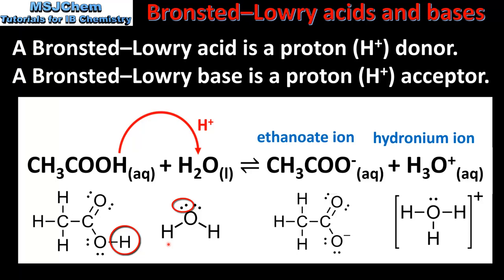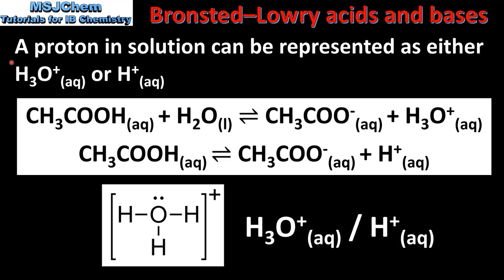A proton in solution can be represented in two ways: as either the hydronium ion, which is H3O+, or the hydrogen ion, which is H+. In the previous slide we saw the reaction in which ethanoic acid reacts with water to form the ethanoate ion and the hydronium ion. This reaction can also be represented by a second equation which shows ethanoic acid dissociating to form the ethanoate ion and the hydrogen ion. Note that in this second equation the water molecule is omitted.